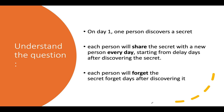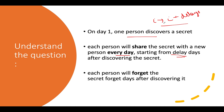Let's try and extract the maximum out of the question. The question says on day one, one person discovers the secret — this is the starting case where only one person knows the secret. Each person will share the secret with a new person every day, starting from 'delay' days after discovering the secret. So if you know the secret on day i, you can only act as a spreader of that secret starting from day i plus delay.